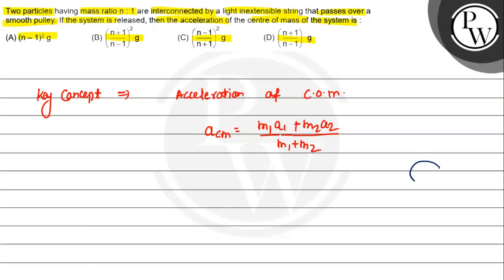The mass ratio is n:1, so m1 is n times m2. That means m1 = n·m2.